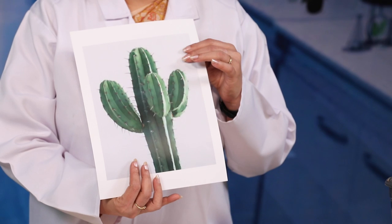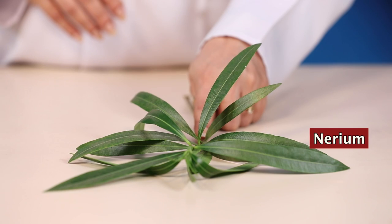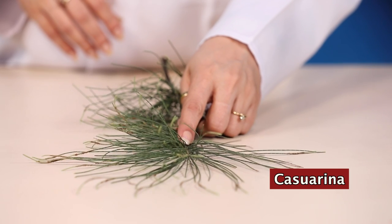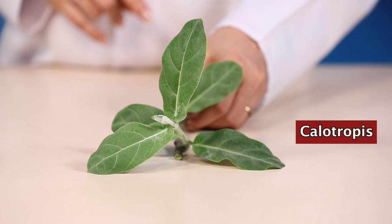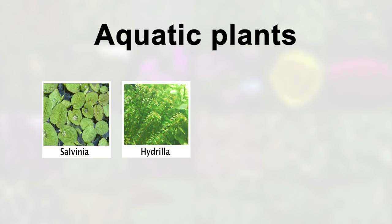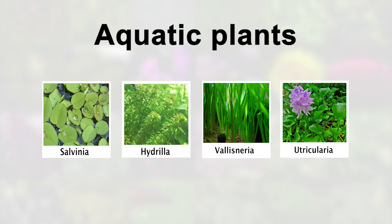Samples of xeric plants include Opuntia, as you can see here, Nerium, Casuarina, Calotropis, and others. For aquatic plant specimens, Salvinia, Hydrilla, Vallisneria, and Utricularia can be taken.